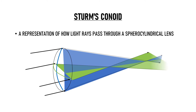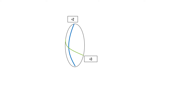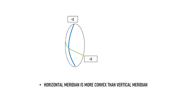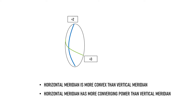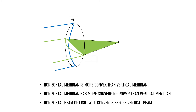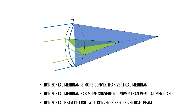Let's understand this with an example. This lens has plus 2 diopter power in the vertical meridian and plus 3 diopter power along its horizontal meridian, meaning the horizontal meridian is more convex and has more converging power than the vertical meridian. Since the horizontal meridian has more power, the horizontal beam of light will converge before the point of convergence of the vertical beam.